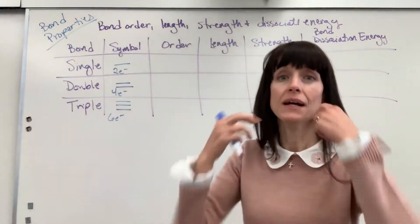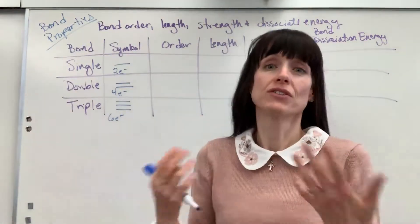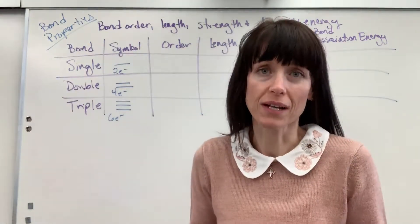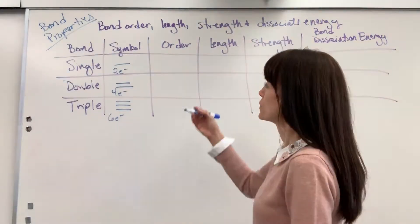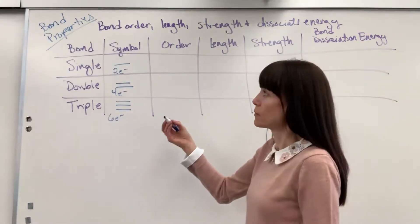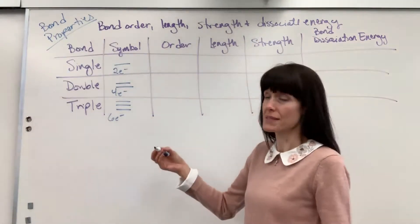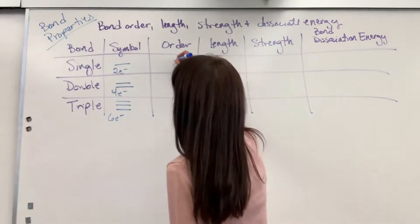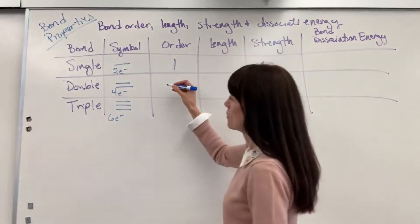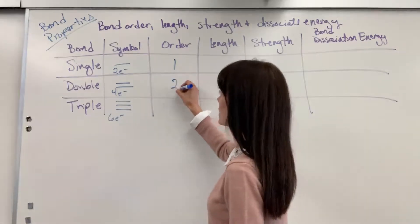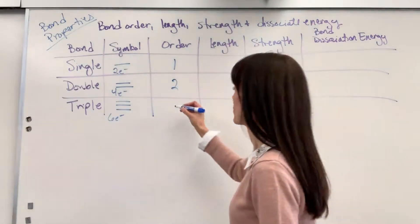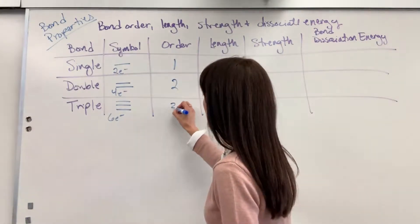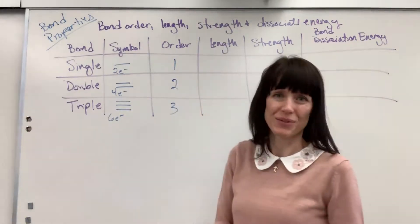Bond order. This is a convention that we've created — it's just a number that we've given to the bonds. The bond order of a single bond is one, the bond order of the double bond is two, and the bond order of the triple bond is three.